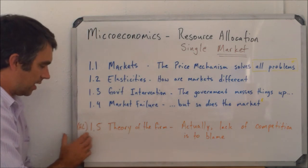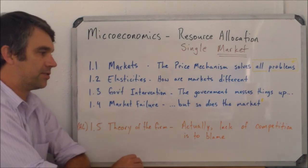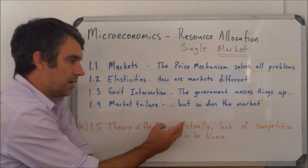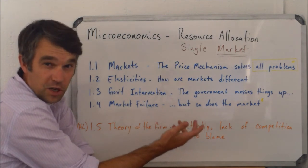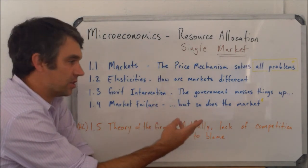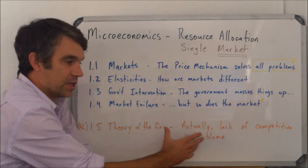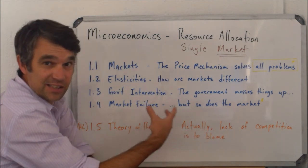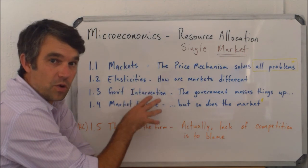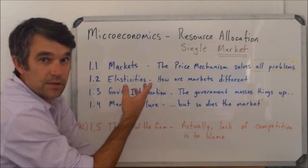The last thing we look at, if you're HL, is what's called theory of the firm. This looks at how different firms are structured, how they work, how they make their decisions, and essentially gets to the idea that competition doesn't exist nearly enough — and that's one of the reasons for the problems we see in microeconomics.